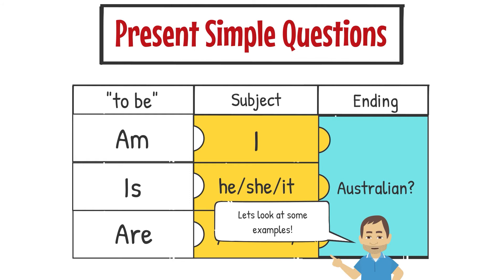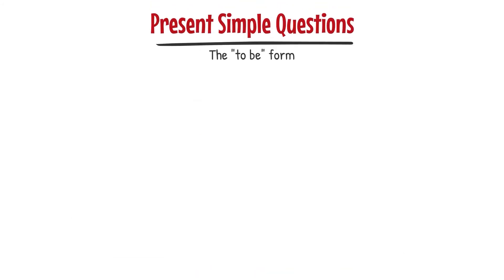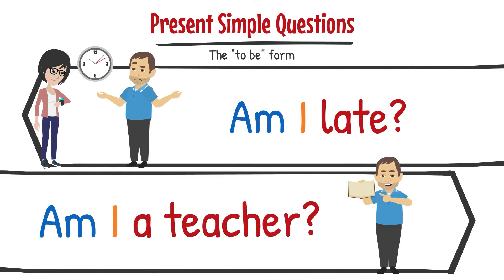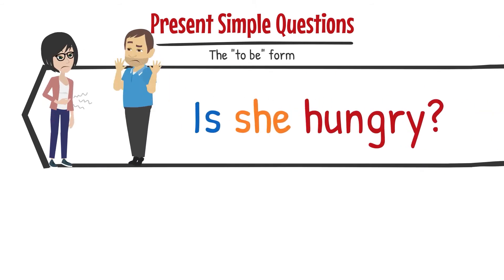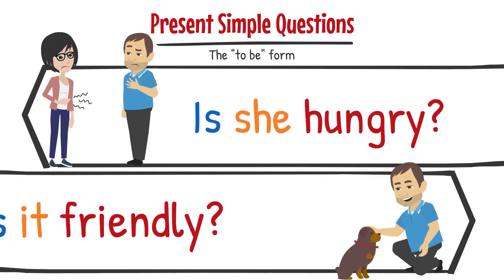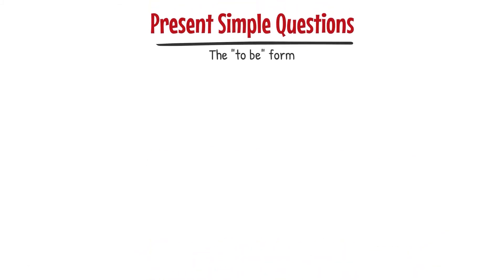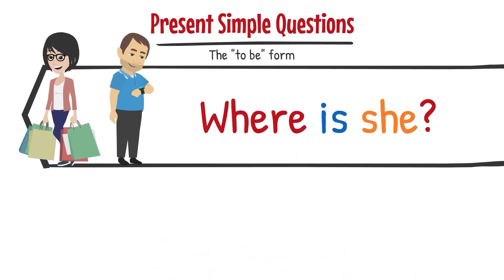Let's look at some examples. Am I late? Am I a teacher? Is she hungry? Is it friendly? Where is she?